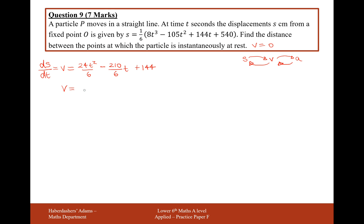Now, this thing needs to equal 0. Let's tidy it up before we do that. So it's going to be 4t² - 35t + 24 = 0.